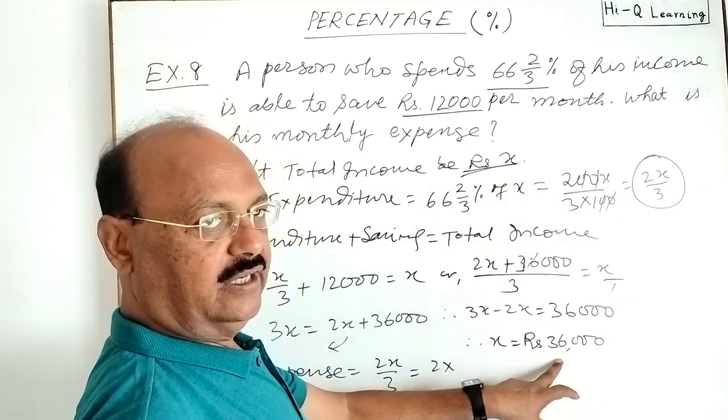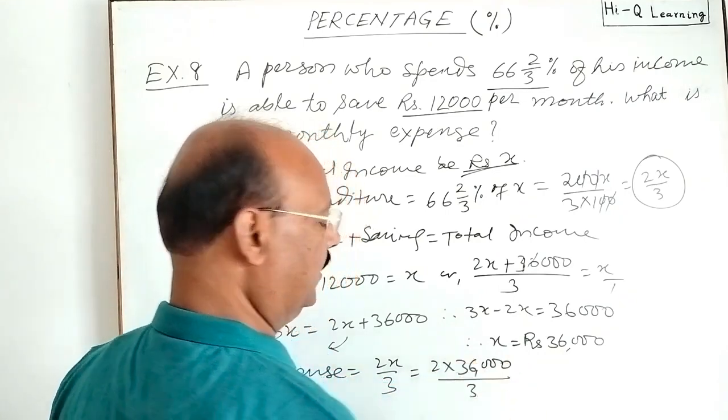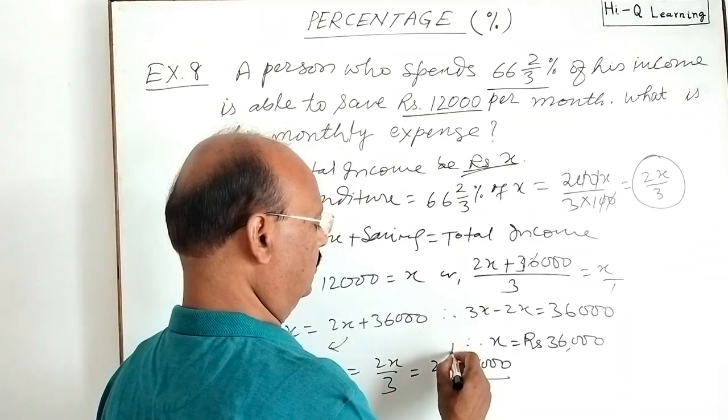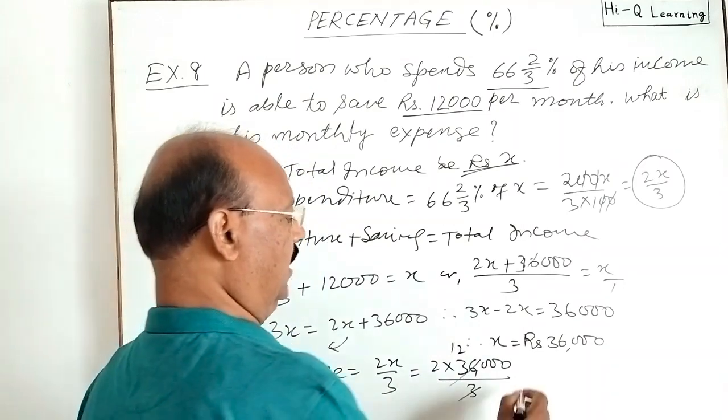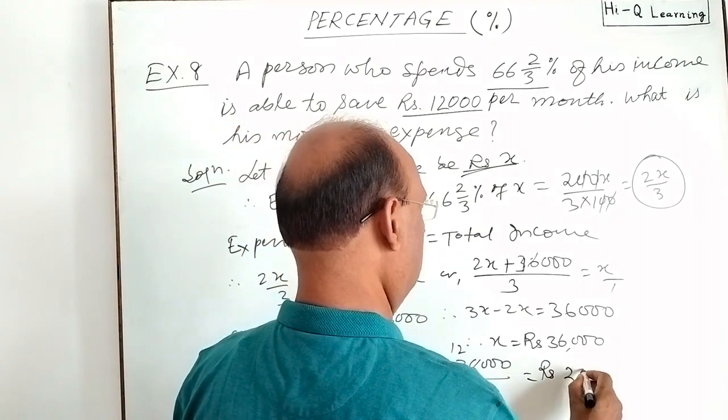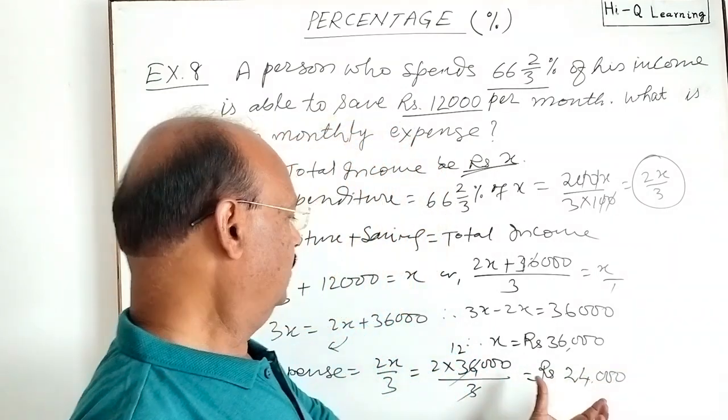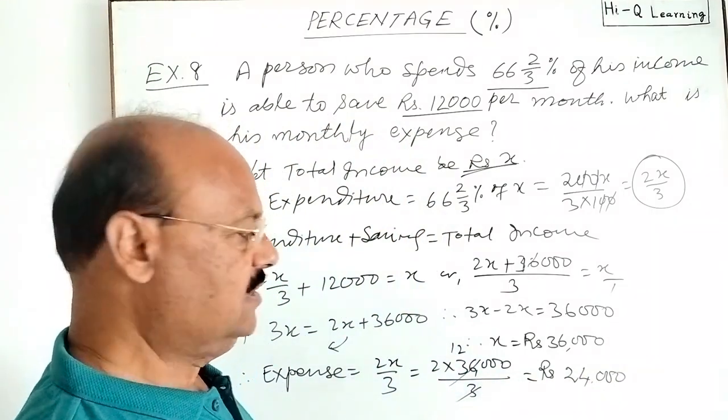Expense is 2X by 3, and X we have calculated here is 36,000. So 2 times 36,000 divided by 3, let us simplify it. This will be cancelled out, 12 into 36, and 2 times 12,000 is rupees 24,000.